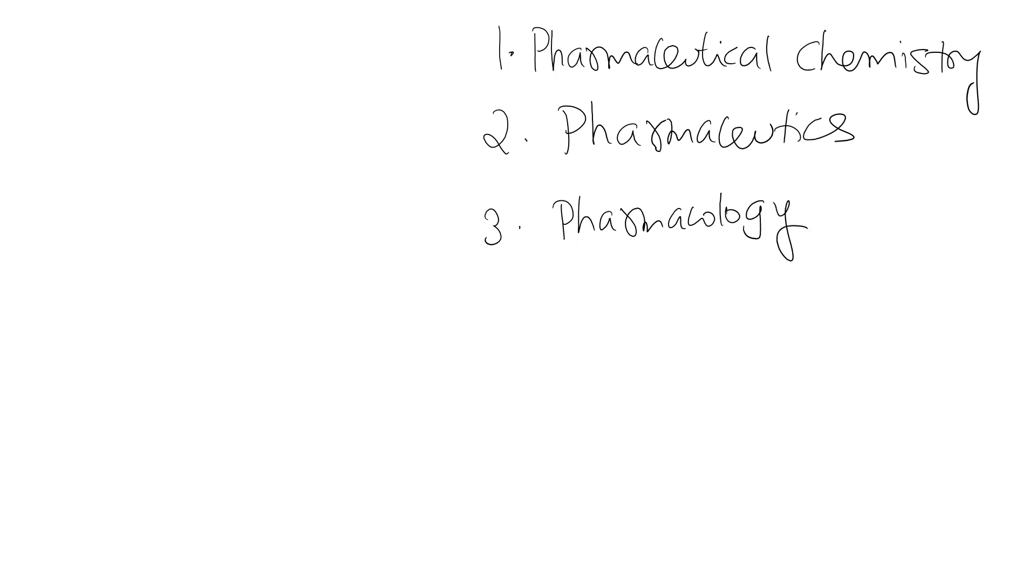We need to understand that pharmaceutical sciences, especially pharmacy, is built on four core building blocks or parameters. The first one is pharmaceutical chemistry. The second one is pharmaceutics. The third one is pharmacology. And the fourth one is herbal drugs, herbal medicine, or pharmacognosy.